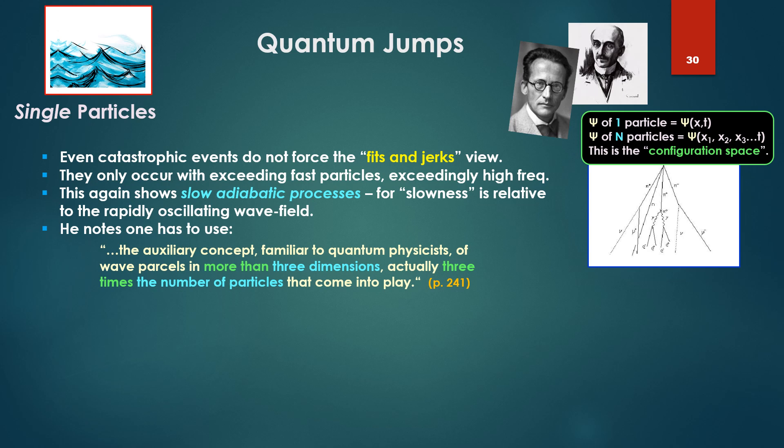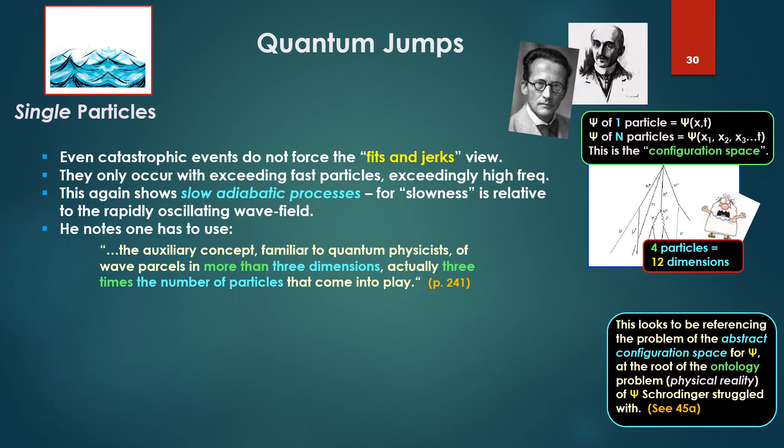Even catastrophic events do not force the fits and jerks view. They only occur with exceedingly fast particles, exceedingly high frequencies. This again shows slow adiabatic processes. For as he notes, slowness is relative to the rapidly oscillating wave field. He notes one has to use the auxiliary concept familiar to quantum physicists of wave parcels in more than three dimensions. Actually, three times the number of particles that come into play. For four particles, we get 12 dimensions. This is coming from the configuration space. The ψ of equation of one particle ψ(x, t), where x is all three dimensions. ψ of n particles is a ψ, again, one wave function, with x₁, x₂, x₃ of t. That is coordinates, spatial coordinates for all the particles, one giant function. In fact, one can have the ψ, or the wave equation of the universe. This is the configuration space that he struggled with. In other words, this is what he looks to be referencing, the problem of the abstract configuration space for ψ, at the root of the ontology problem, the physical reality problem of ψ that Schrödinger struggled with as we discussed in 45a.